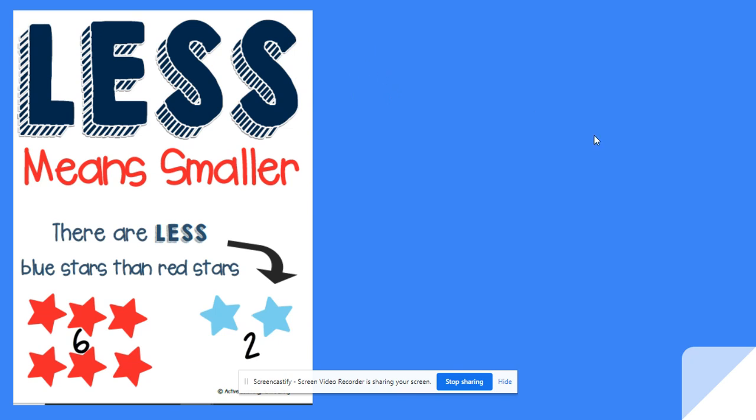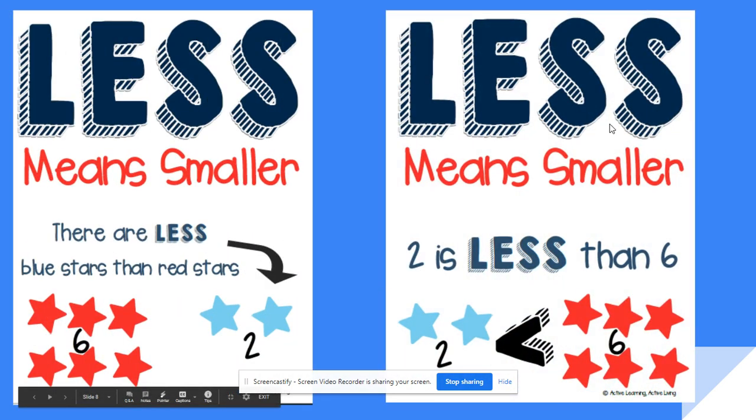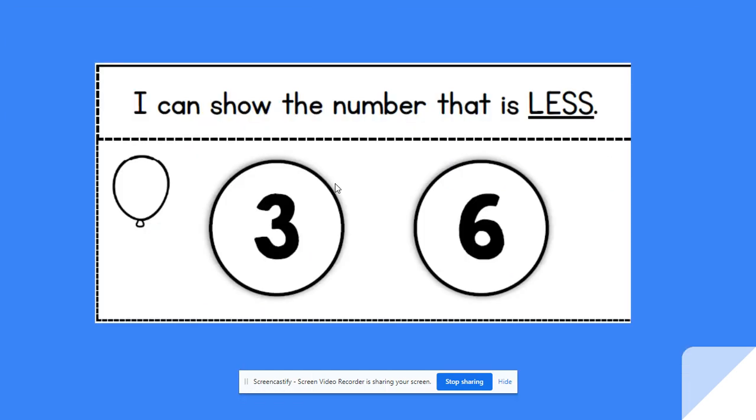The next word is less. Less means smaller. So if I look at my picture again, there are less blue stars than red stars. And you can also use one of those alligators. Remember, he eats the bigger one. So you can see he's kind of pointing to the blue stars, and he's eating the red. And we can say two is less than six. Less means smaller.